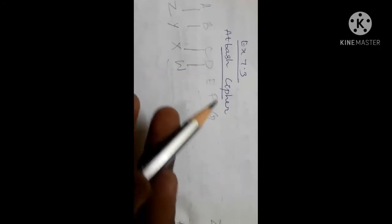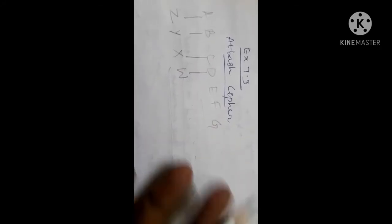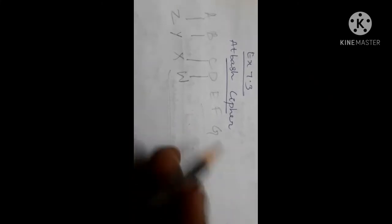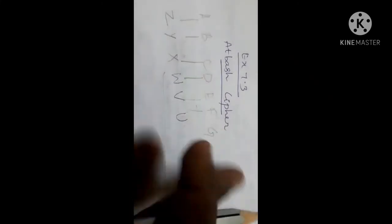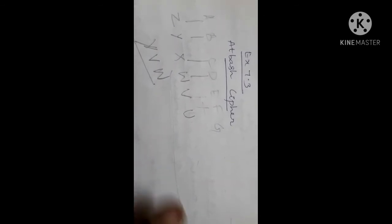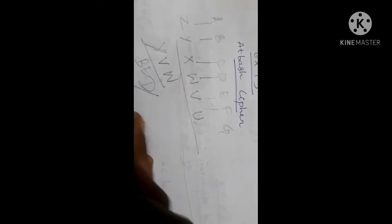They will be giving some sentence or coded word. For example, if they give Y-B-W, you need to find what word it is through the Atbash cipher. For that, first you write alphabets in normal order, then in reverse order below, then match the letters. The bottom letters should be matched with the top letters. So Y belongs to B, B belongs to E, and W belongs to D — so you got the word BED. Like this, questions will be asked in your exam.